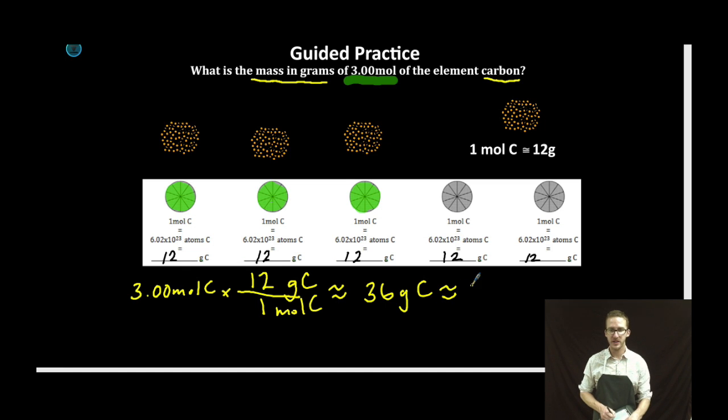If I'm using my sig figs here, 36.0 grams of carbon. Remember, when we use conversion factors, we're not going to include those when determining number of sig figs, as those conversion factors are considered infinitely precise. Also notice my units of moles cancel out. I'm left with units of grams. Final answer. Boom!